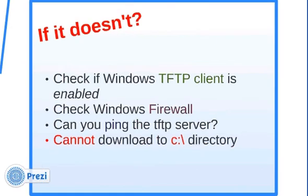What if it doesn't work? First, check if the Windows TFTP client is enabled — by default it's not, so you should enable it. Check Windows Firewall, which does a great job of stopping everything including TFTP client testing. Check whether you can ping the TFTP server — if you can't, you can't download anything. And here's a gotcha that threw us for a loop: you cannot download to the root directory of the C drive; you have to download to a subdirectory like the temp directory mentioned before.